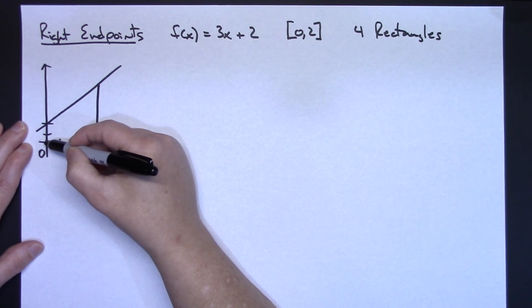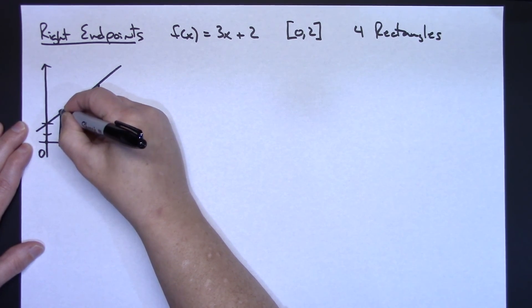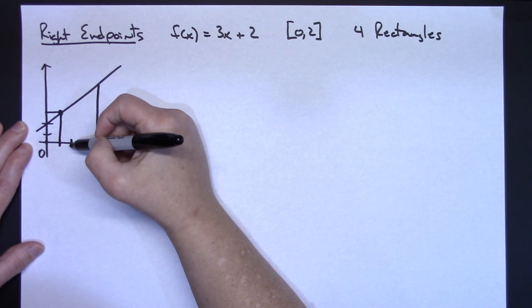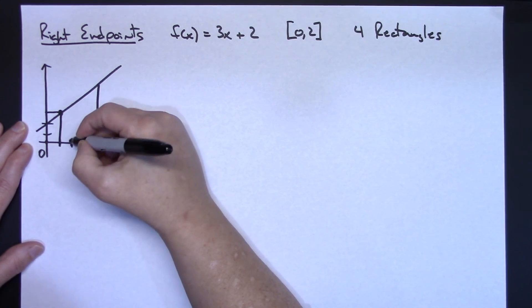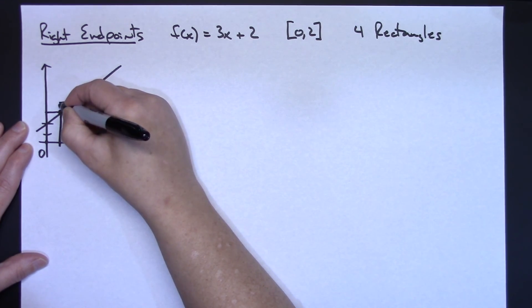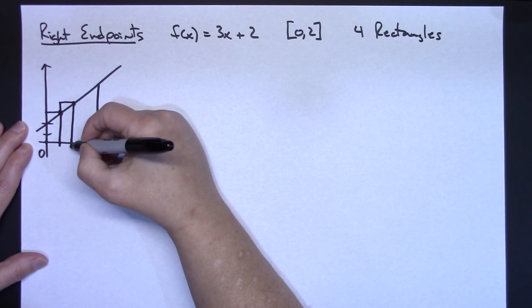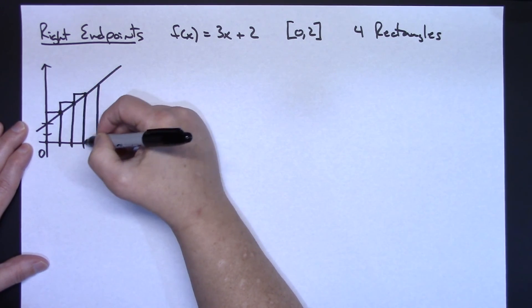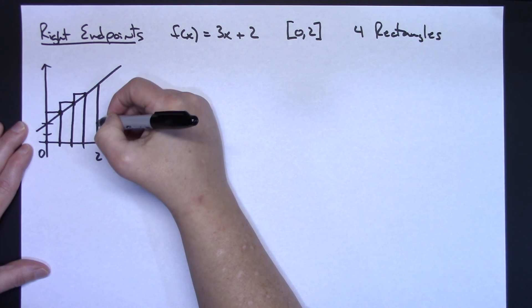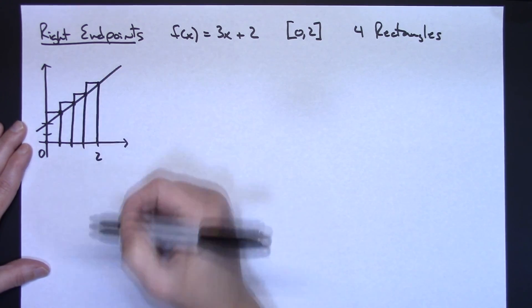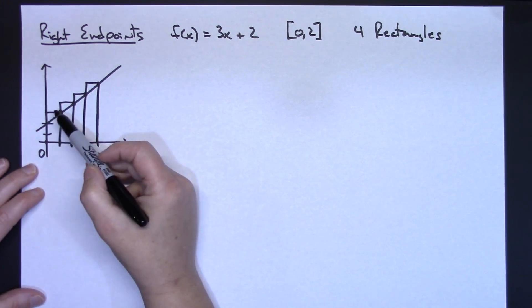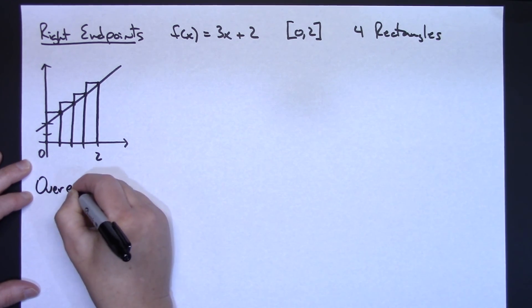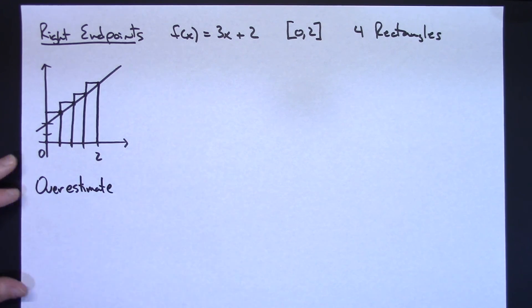This time I go to the right endpoint of each rectangle and go up to the curve to draw the rectangle. For the first rectangle I go to the right endpoint and draw up to the curve, then the second, third, and fourth the same way. Hopefully you can see that calculating the area of each of these rectangles is going to give an overestimate.